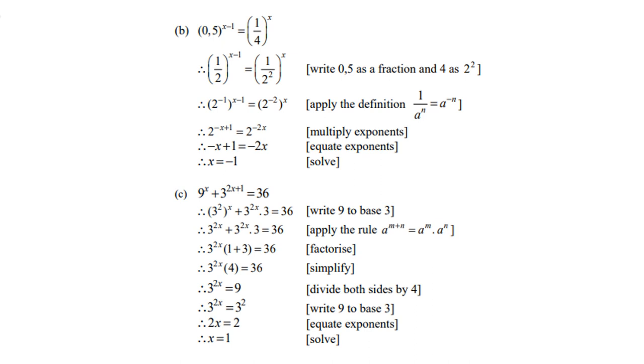3 to the power 2x plus 3 to the power 2x, you can take out 3 to the power 2x as a common factor, and you're left with 1 plus 3. 1 plus 3 is 4, divide both sides by 4, and you get 9.